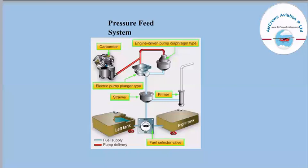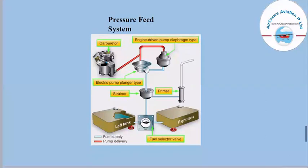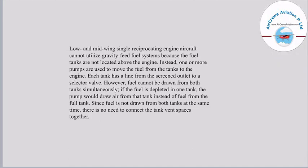In a pressure feed fuel system, pumps are used to move fuel from the tanks to the engine. Each tank has a line from the screened outlet to a selector valve. However, fuel cannot be drawn from both tanks simultaneously — if the fuel is depleted in one tank, the pump would draw air from that tank instead of fuel from the full tank. Since fuel is not drawn from both tanks at the same time, there is no need to connect the tank vent spaces together.